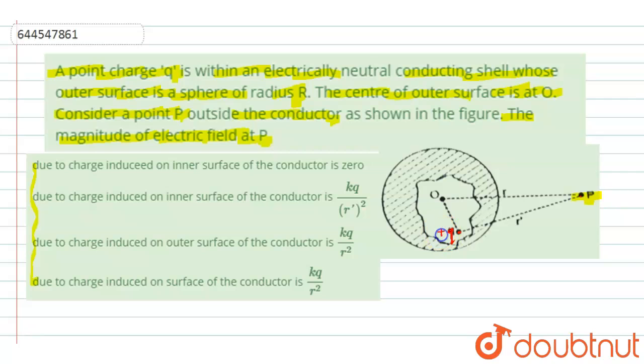Now this charge is plus Q. Now see, as this charge is plus Q, so in the vicinity, a minus charge will accommodate, right, like this, on this void.